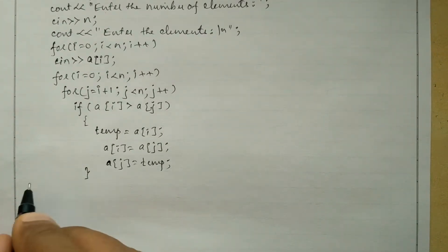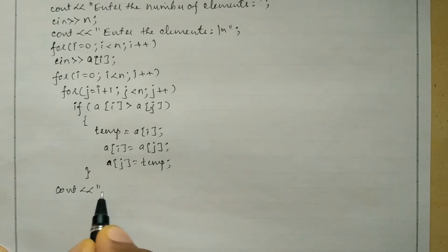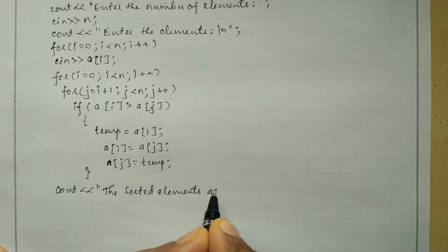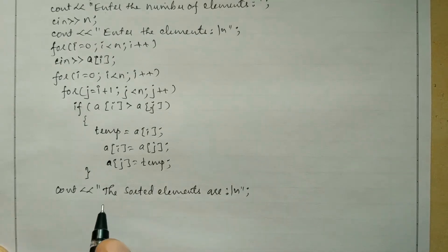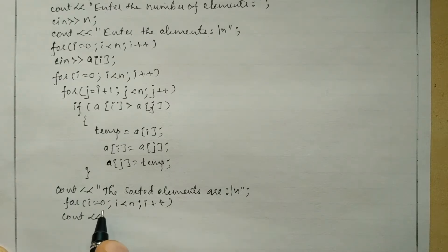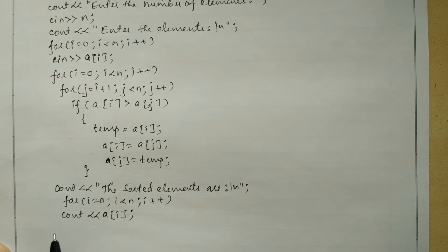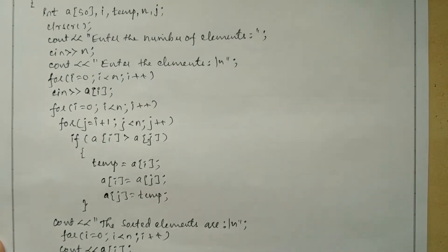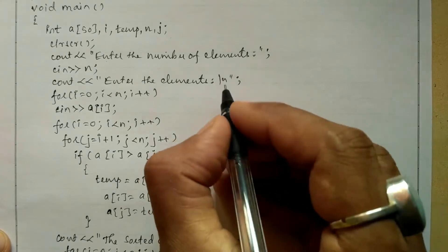Now we print the sorted elements. Using cout with stream insertion operator we write 'The sorted elements are' followed by a newline and a semicolon. Through a for loop — for i equal to 0, i less than n, i plus plus — we write cout and print a[i]. Finally we write the getch() function and the closing curly brace for the main function.